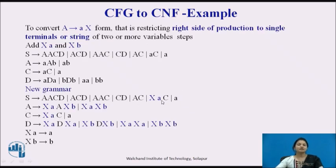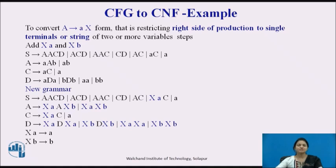Now we convert to CNF format, where A produces AX. We restrict the right side of each production to a single terminal or a string of two or more variables. We add XA and XB in place of single terminals wherever they appear — wherever terminal A appears we replace it with XA, and wherever terminal B appears we replace it with XB.